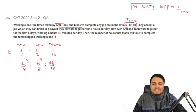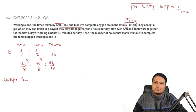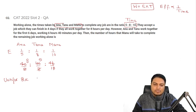This means that in one hour, Annu makes 8x units, Tannu makes 5x units, and Mannu makes 4x units. We work in hours because the question deals with hours.